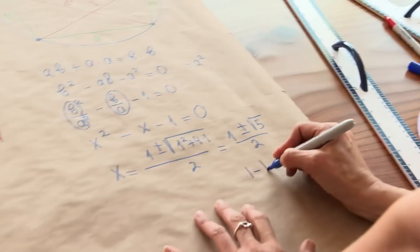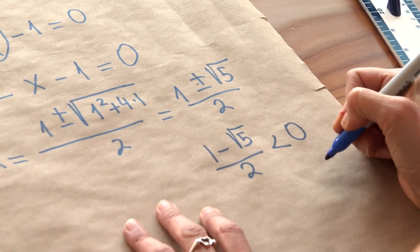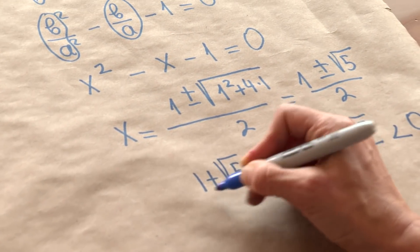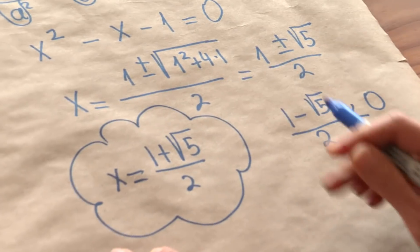The smaller root, which is 1 minus square root of 5 over 2, is negative. But the larger root is positive, and it is the famous golden ratio.